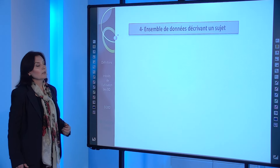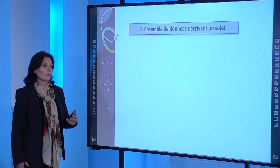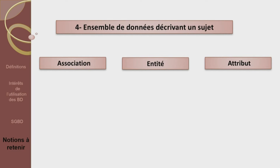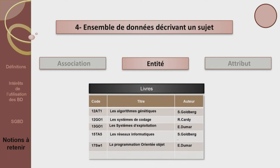Quatrième définition : l'ensemble des données décrivant un sujet est appelé association, entité ou bien attribut ? Ça ne peut pas être l'association, puisque l'association c'est la description d'une activité entre les sujets. Ça ne peut pas être un attribut, qui est une seule donnée décrivant un objet. Ça ne peut être que l'entité, comme on a vu avec l'entité livre qui regroupe l'ensemble des données décrivant le sujet livre.